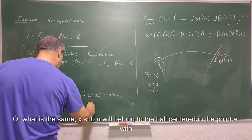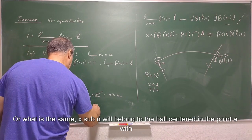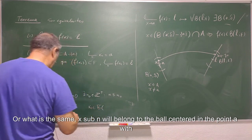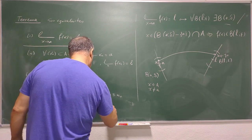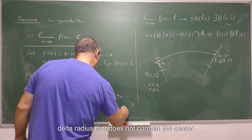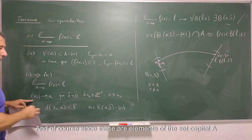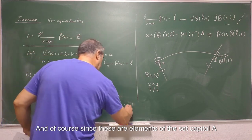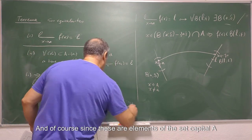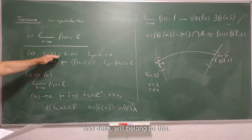So that if n is greater than or equal to n sub 0, then x sub n, the distance D because we are talking about elements of metric space E, the distance D between x sub n and a will be less than delta or what is the same, x sub n will belong to the ball centered in the point a with delta radius that does not contain the center.